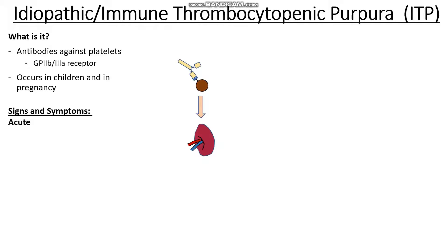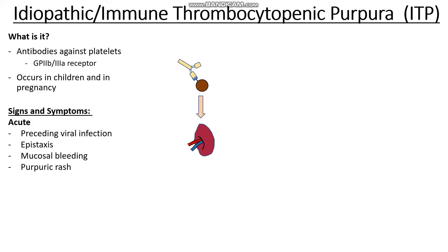In terms of signs and symptoms, in acute disease it usually comes on after a viral infection — especially common in children who develop bruising or bleeding following a viral illness. Things like nosebleeds, because if we can't clot properly we're more likely to bleed from exposed areas. Mucosal bleeding when brushing teeth, purpuric rashes because we can't form the initial platelet plug, and easy or spontaneous bruising.